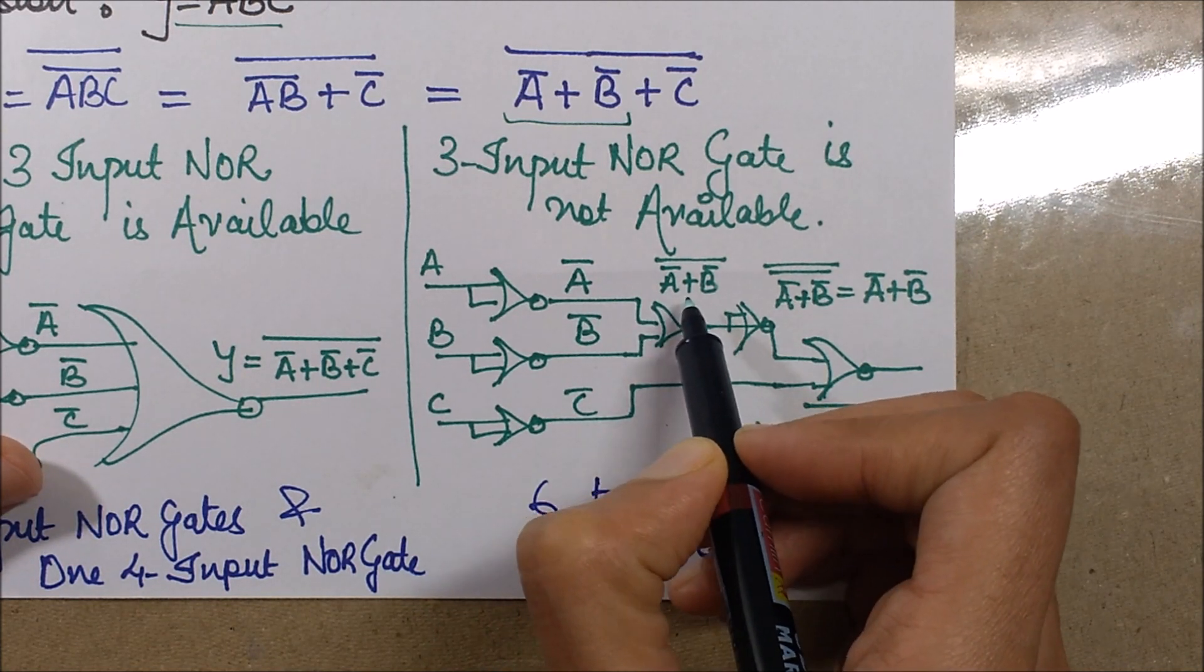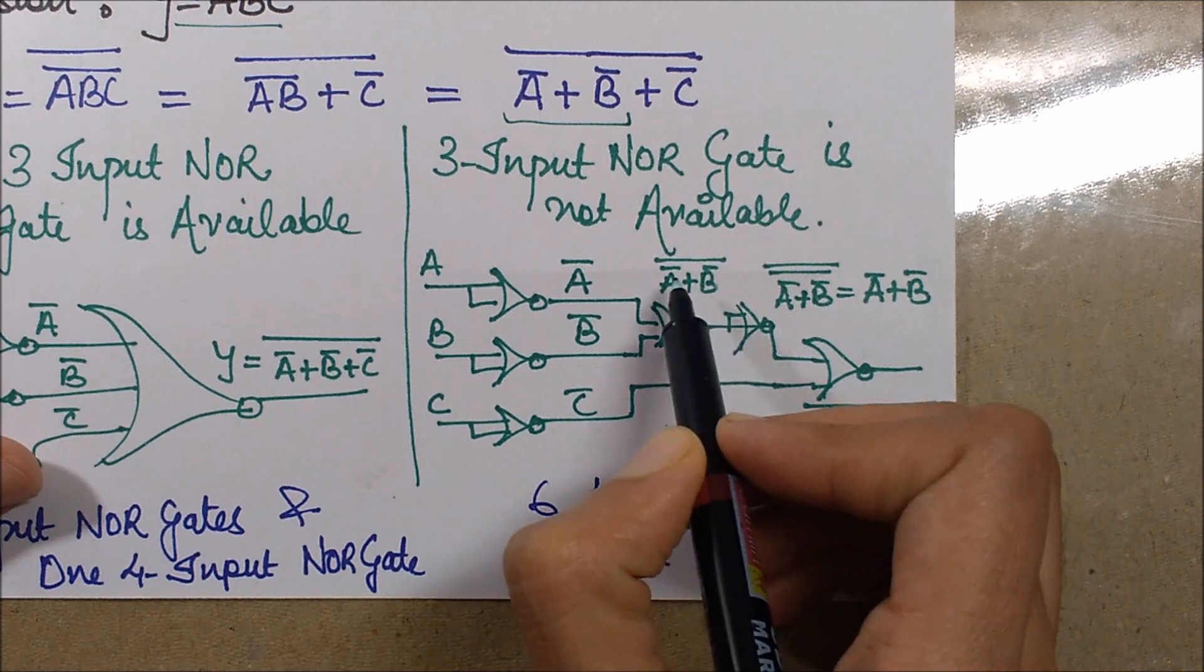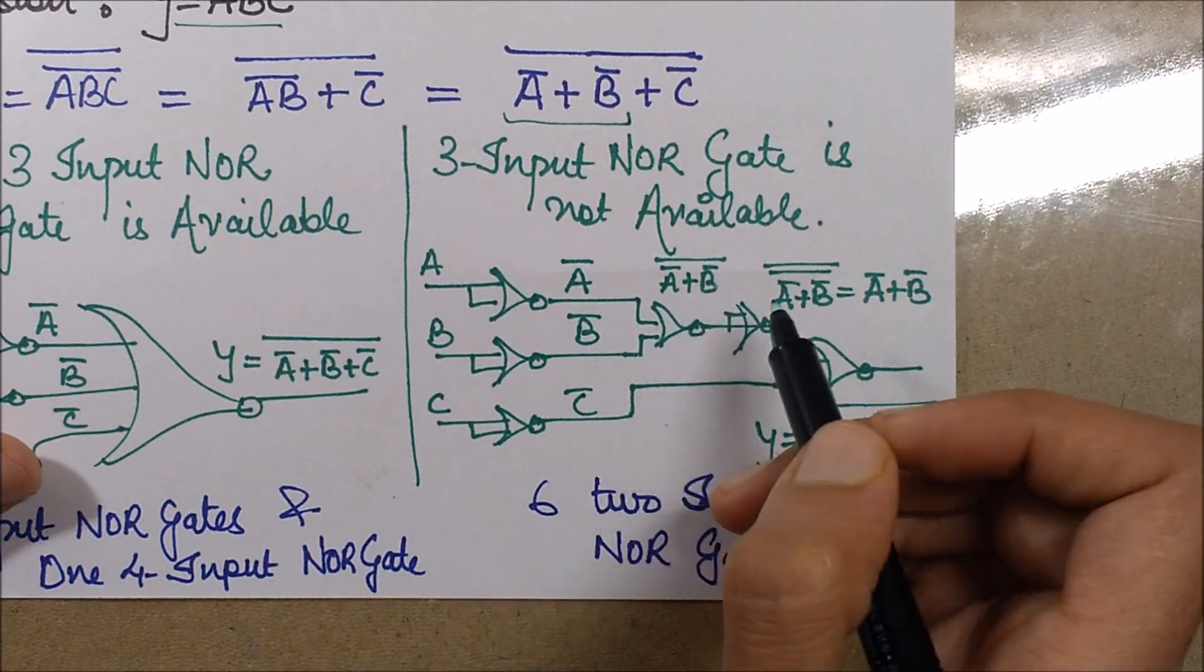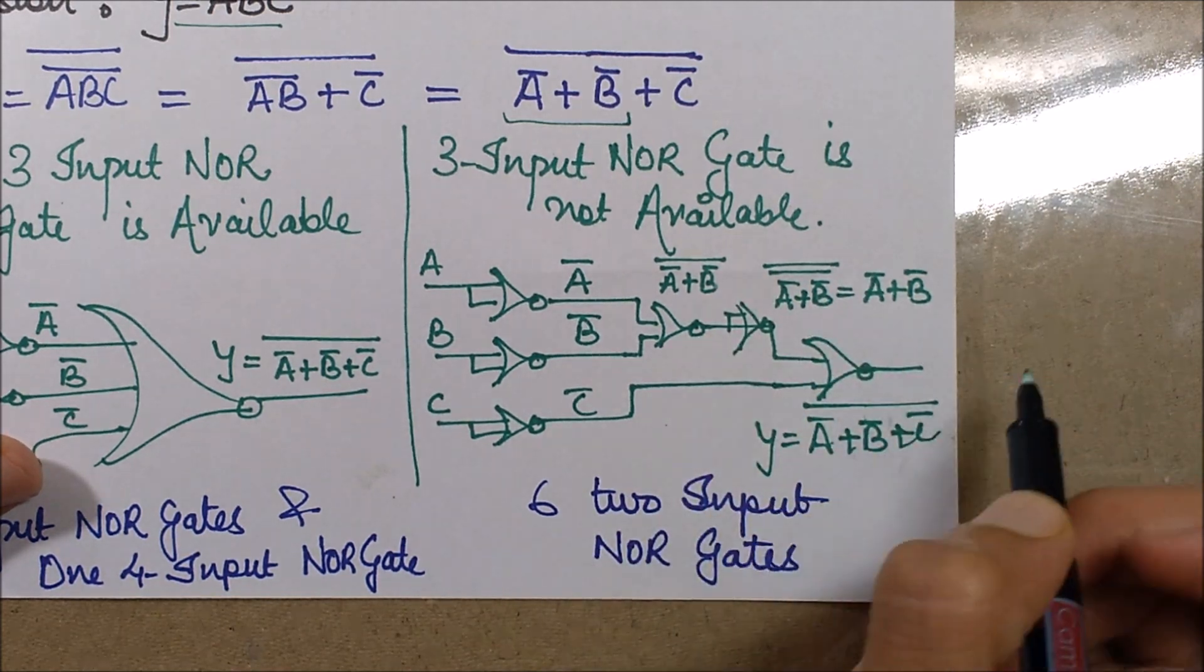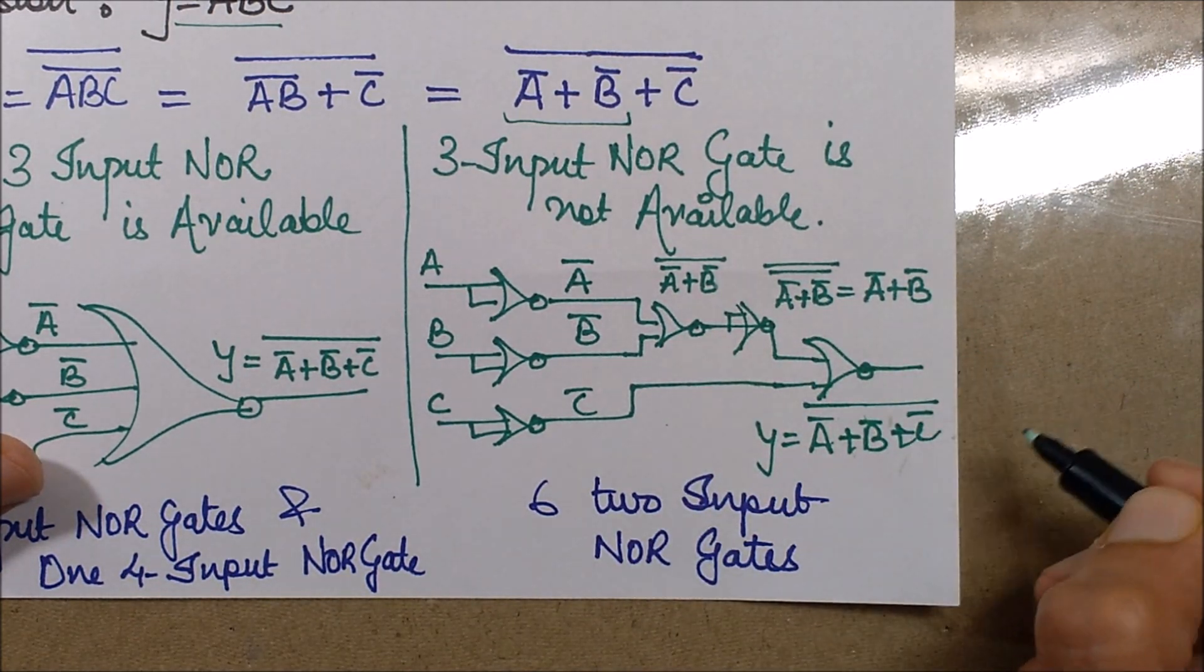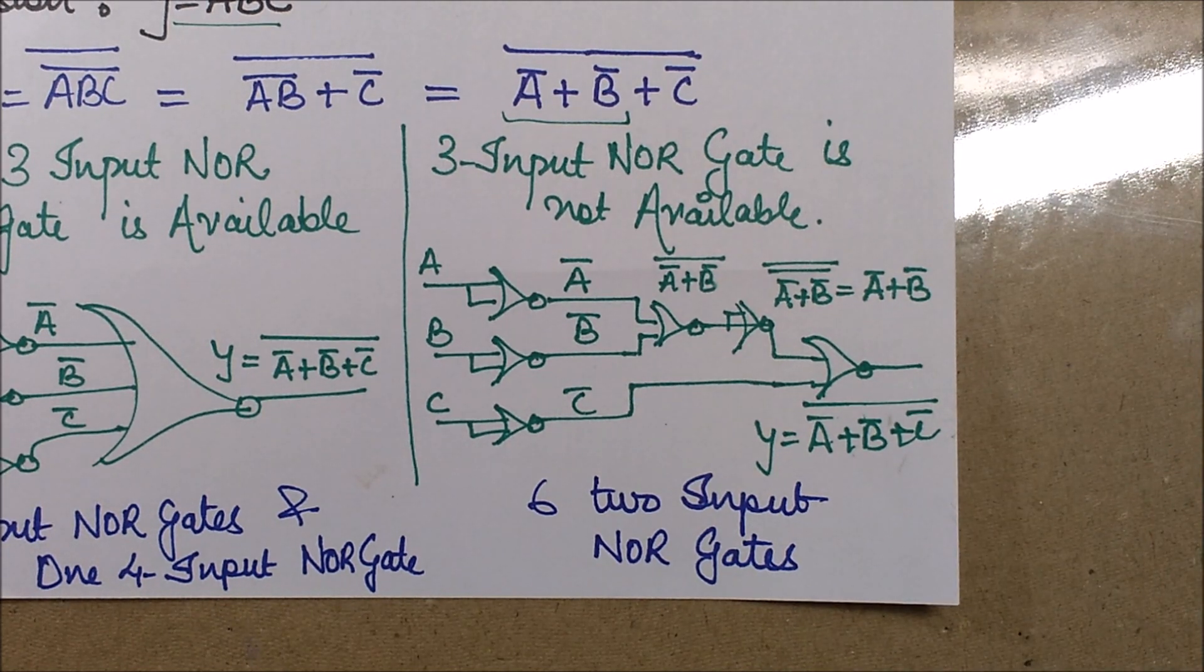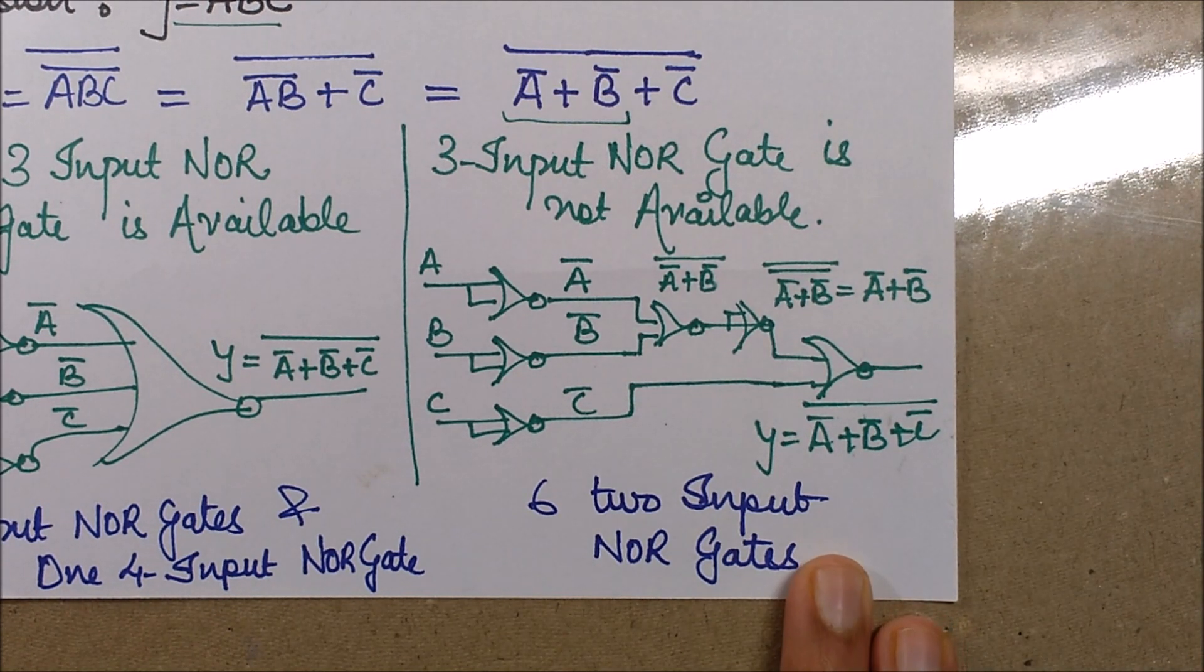It will yield this expression. I need another NOR gate to NOT this expression since it has a negation of what I require. So the negation cancels out, and then I'll finally use this NOR gate in order to get my final expression. So if I compute how many NOR gates were required, six were required in this case.